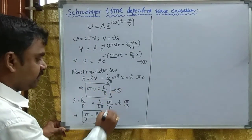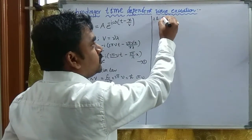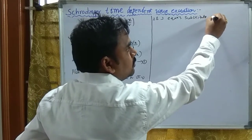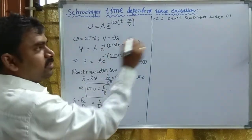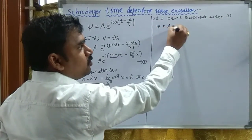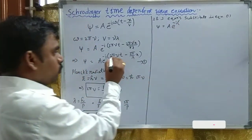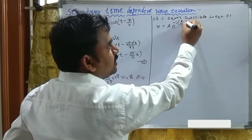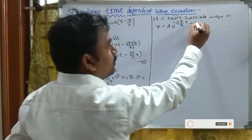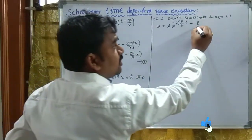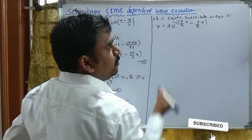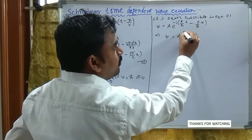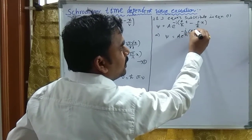Substituting into equation one: in place of 2·pi·nu we write E/h-bar, and in place of 2·pi/lambda we write p/h-bar. Taking 1/h-bar as common, the wave function becomes: psi equals to A·e to the power minus i/h-bar · (E·t minus p·x). Now for this equation, we have to differentiate once with respect to x and also with respect to time.